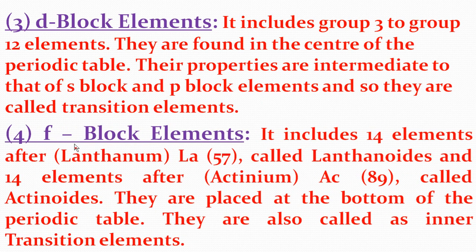The F block elements are placed at the bottom of the periodic table. This block includes 14 elements after lanthanum (La), called lanthanoids, and 14 elements after actinium (Ac, atomic number 89), called actinoids. Because these elements are placed at the bottom of the periodic table, they are called inner transition elements.